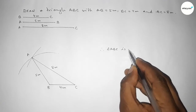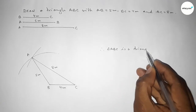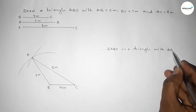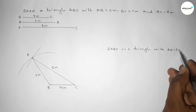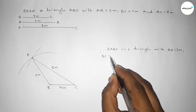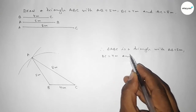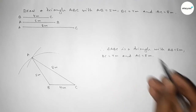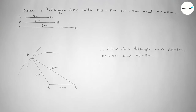So triangle ABC has AB equal to 5 centimeters, BC equal to 4 centimeters, and AC equal to 8 centimeters. That's all — thanks for watching. If this video is helpful, please share it with your friends, and please like, comment, and share.